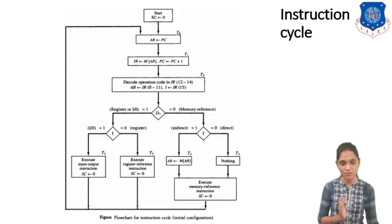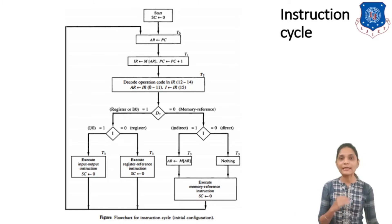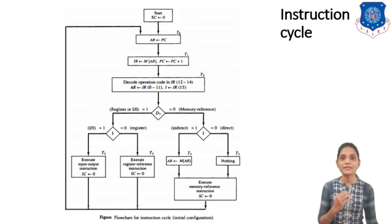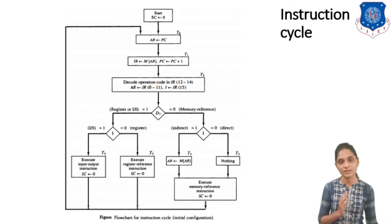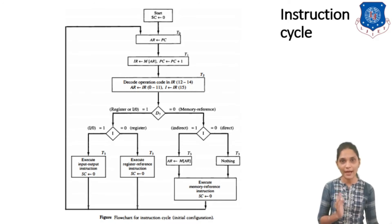For register reference or IO reference instructions, at T3 timing signal the instruction is executed. At the end of execution, the sequence counter is cleared to 0 so the next instruction can start. The condition is: D7=1; if I=1 it is IO reference, if I=0 it is register reference. Execution of these instructions requires only the T3 timing signal.